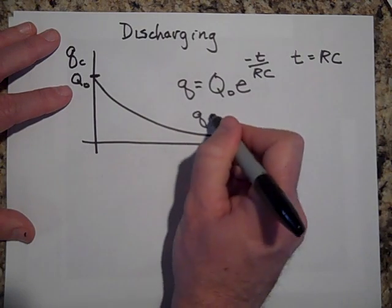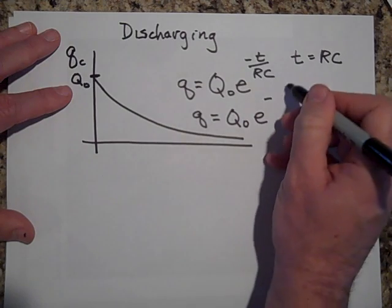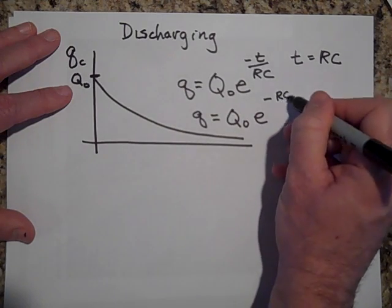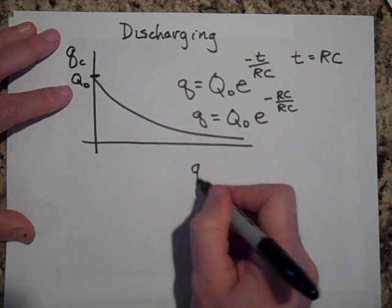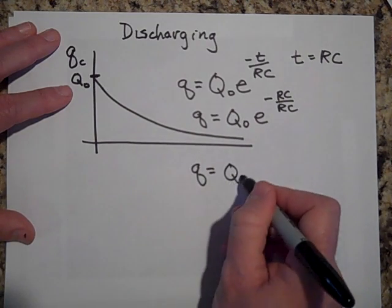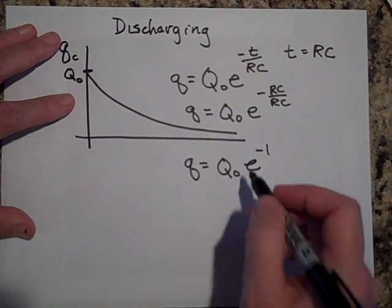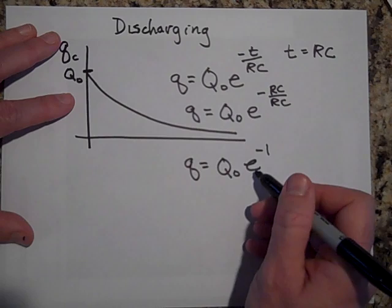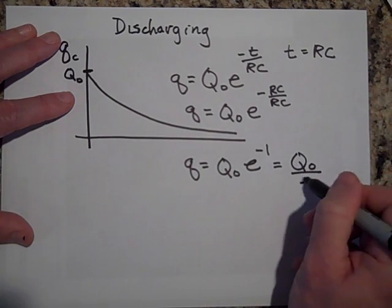When I put that in, I get Q naught times E to the negative, and I'm going to put in RC divided by RC. Well, that's the same thing as Q naught times E to the negative one. Well, E to the negative one, that's the same thing as just Q naught over E.